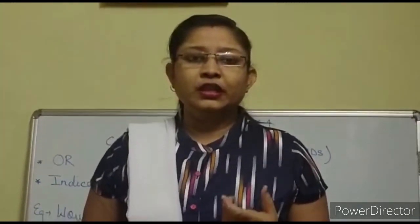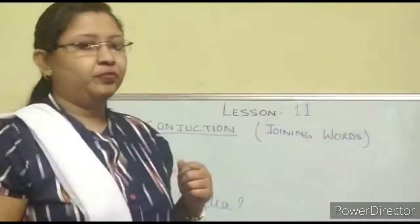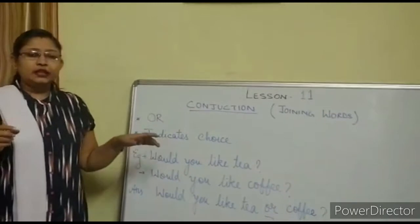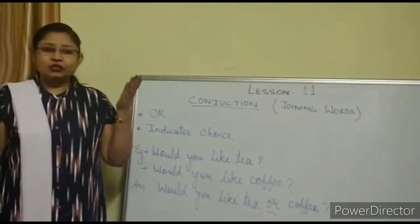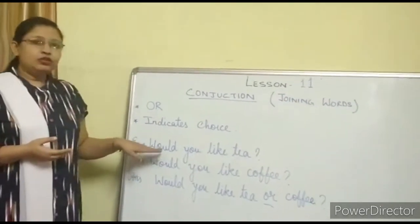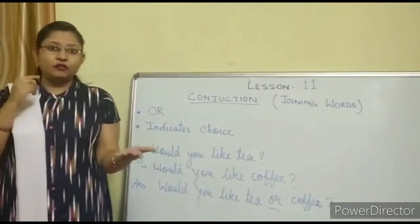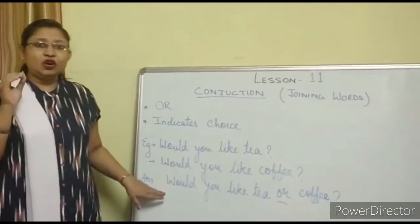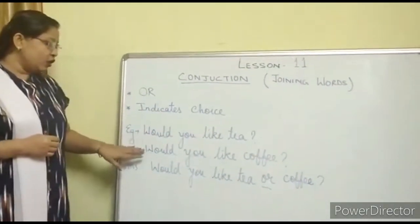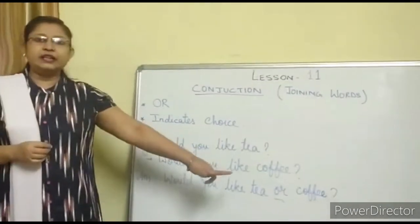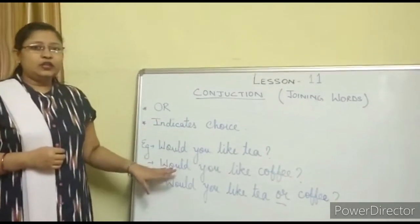The last conjunction we will study today is 'or.' We generally use 'or' to indicate or show choice. Two choices will be given to you, and in those types of sentences we always use 'or.' Example: 'Would you like tea?' and 'Would you like coffee?' — joined as 'Would you like tea or coffee?' We do not repeat 'would you like' in the second sentence. To indicate choice, we use 'or.'